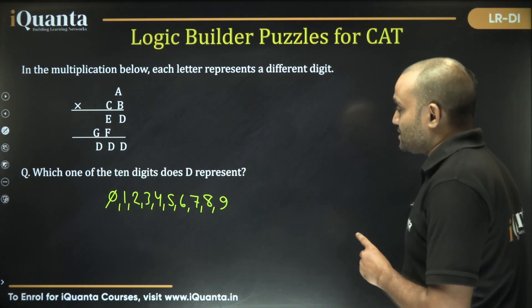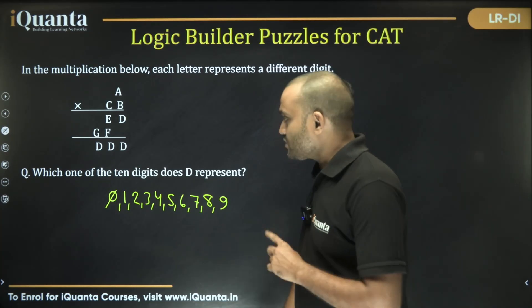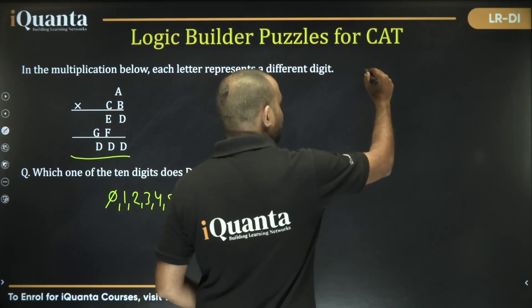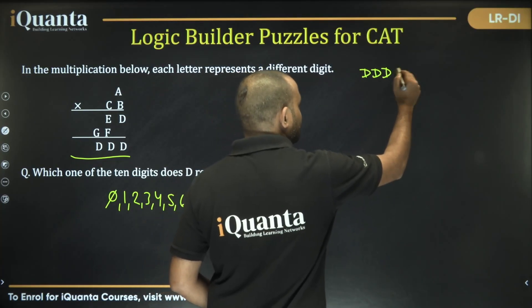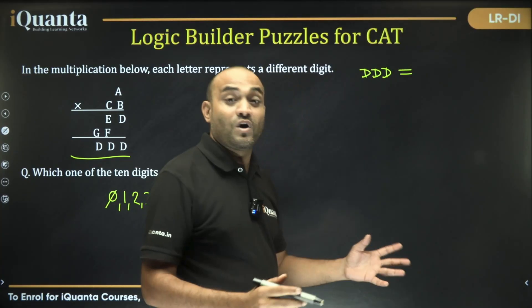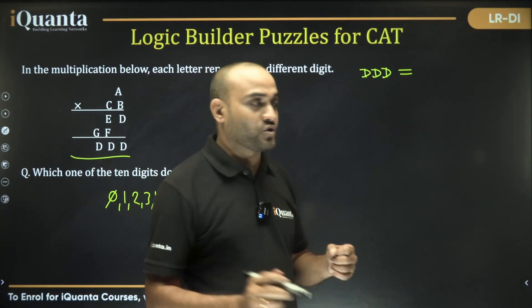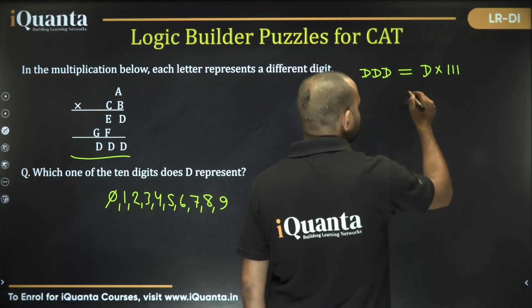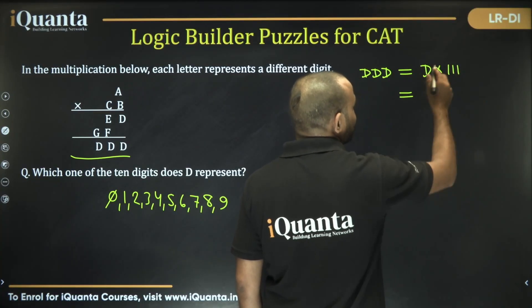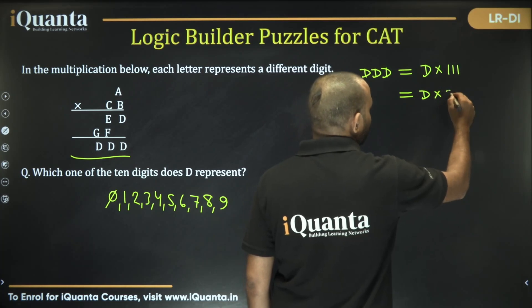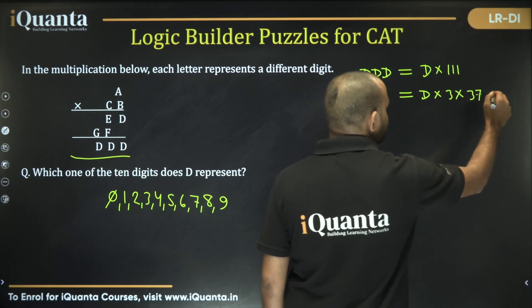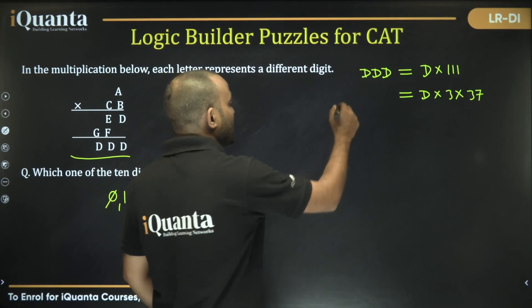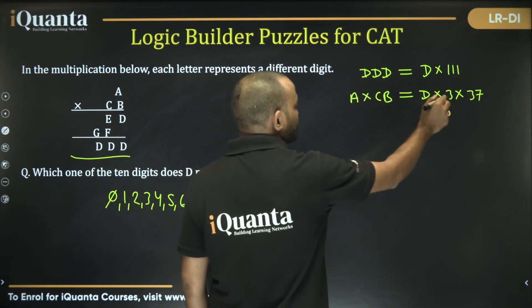So if we start solving this question, first the result is DDD. What do you understand by that? Can I write DDD is nothing but like 111, 222, 333, 444. So I can write it as D into 111 and I can also write it as D into 3 into 37.